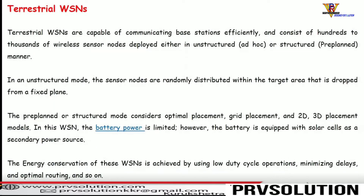Terrestrial wireless sensor networks are capable of communicating with a base station efficiently and consist of hundreds to thousands of sensor nodes deployed either in an unstructured (ad hoc) manner or in a structured (pre-planned) manner. In an unstructured mode, sensor nodes are randomly distributed within the target area, dropped from a fixed plane. The pre-planned or structured mode considers optimal placement — deciding sensor locations using grid-based criteria in 2D or 3D placement.